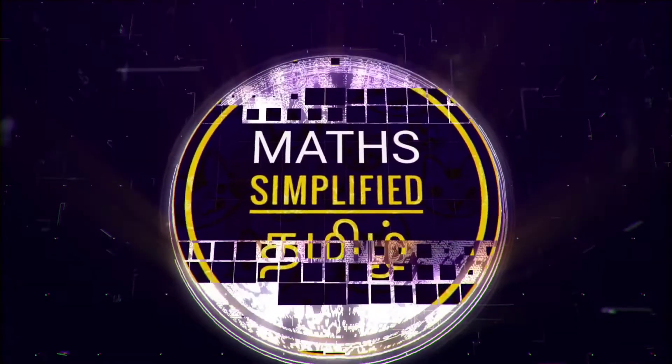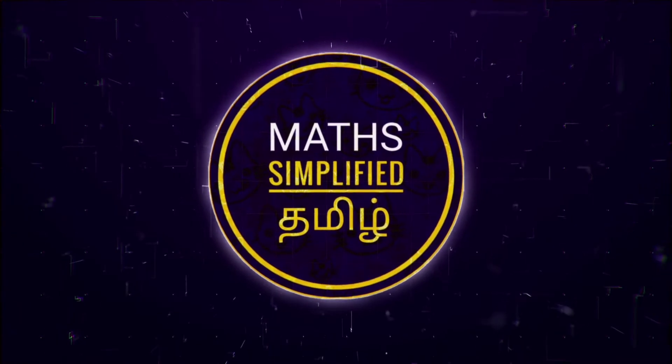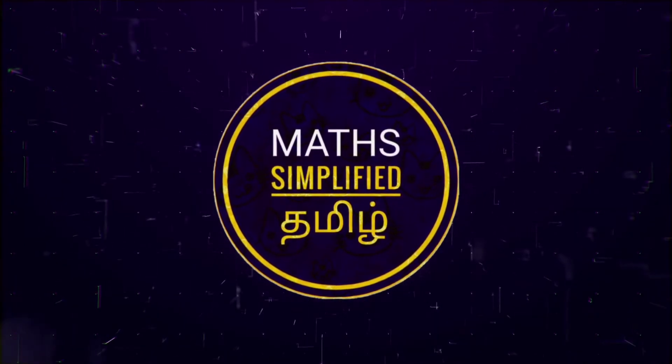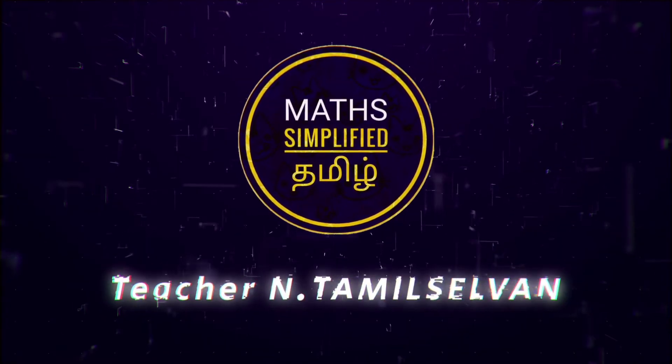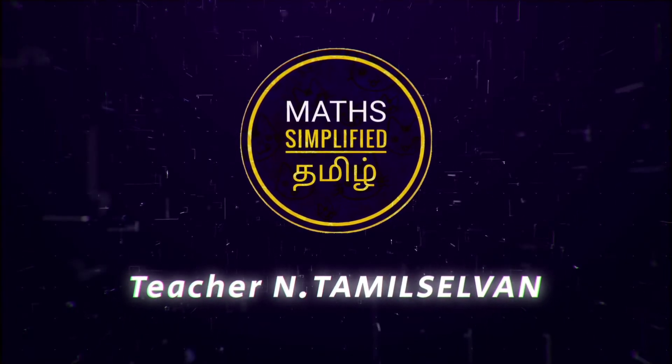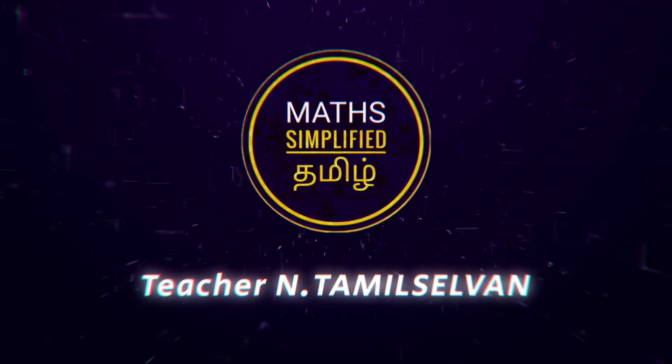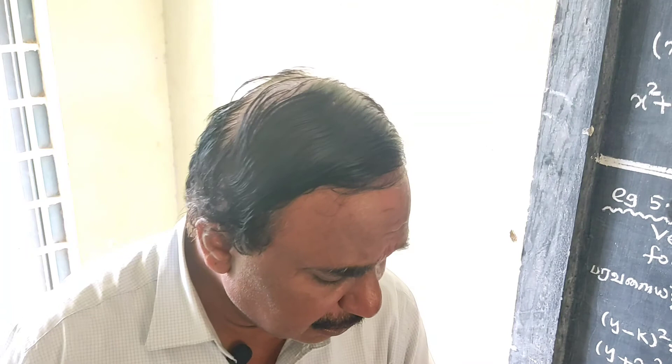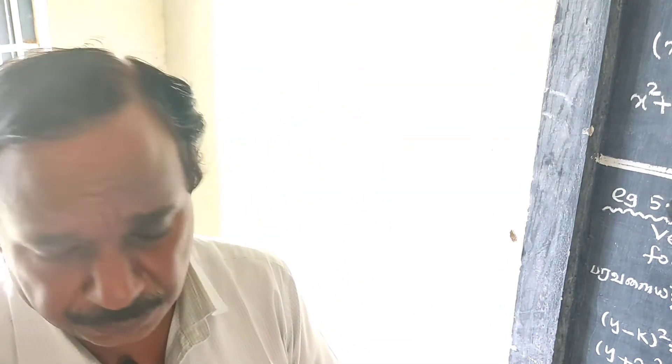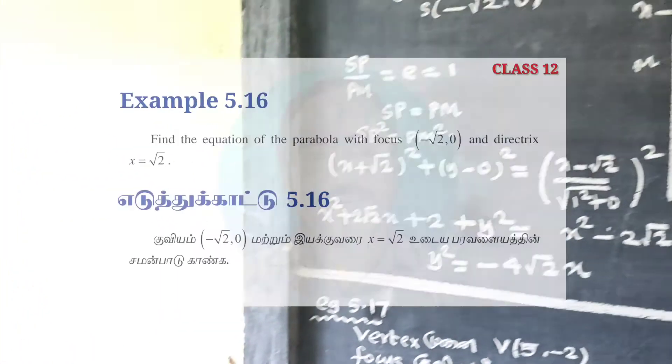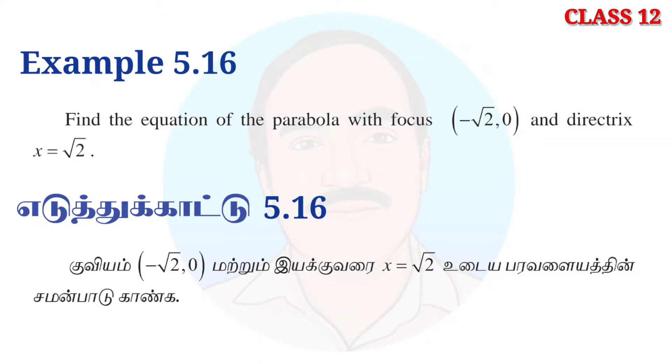Welcome to Example 5.16: Find the equation of the parabola with focus (-√2, 0) and directrix x = √2.